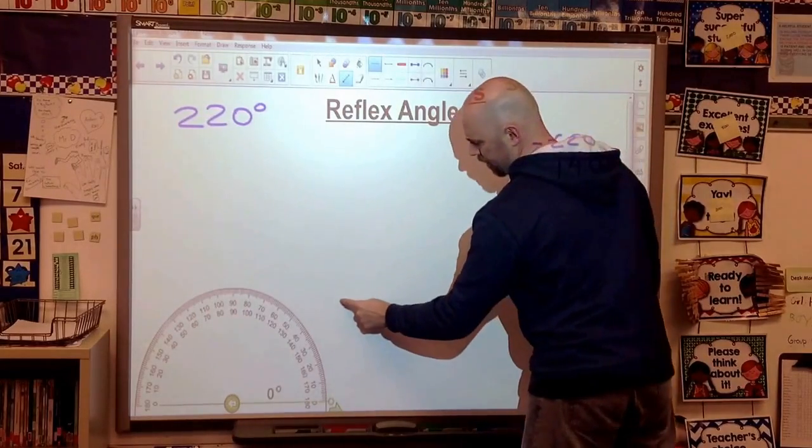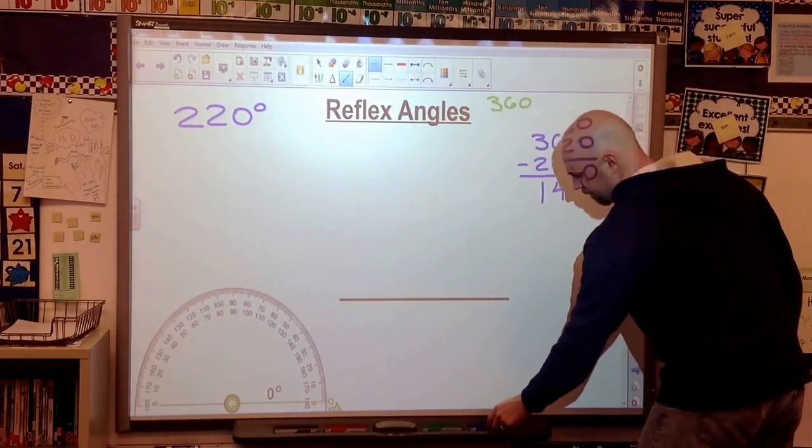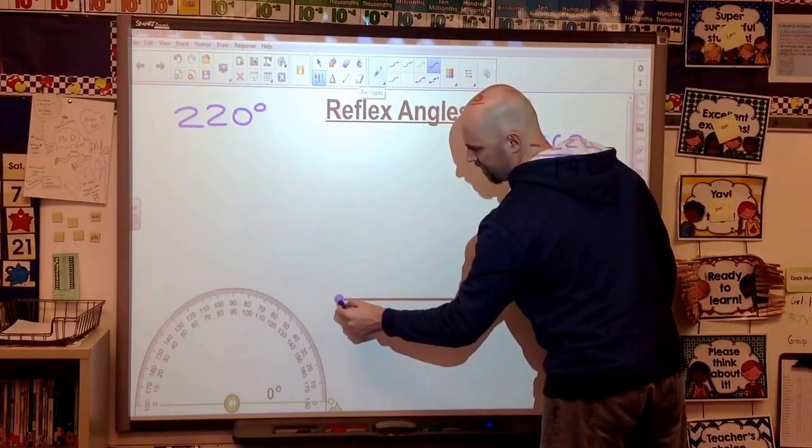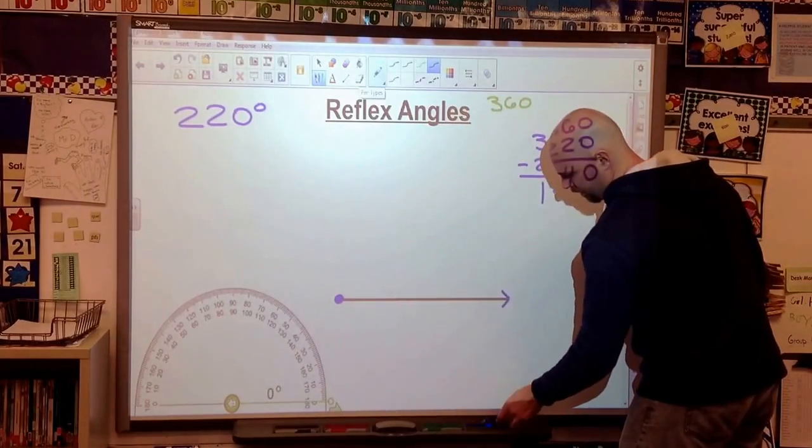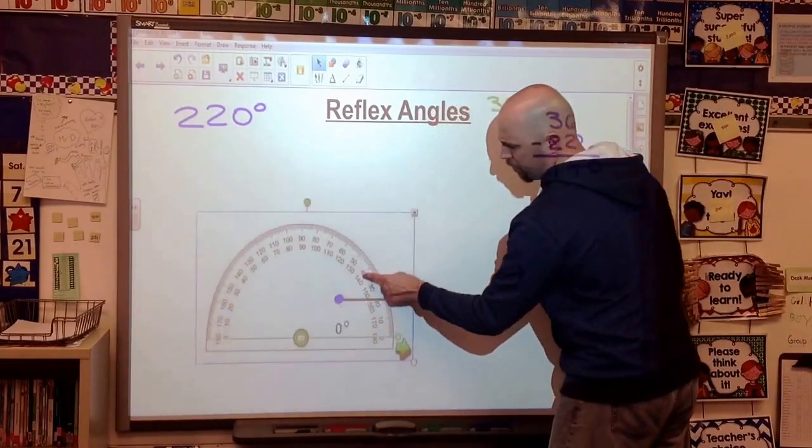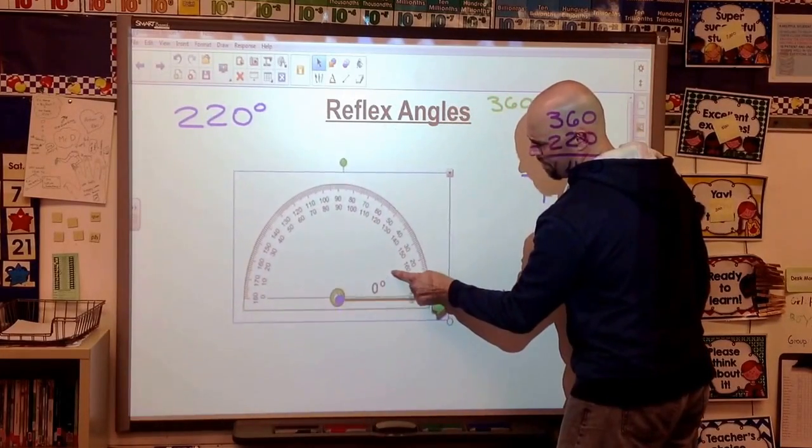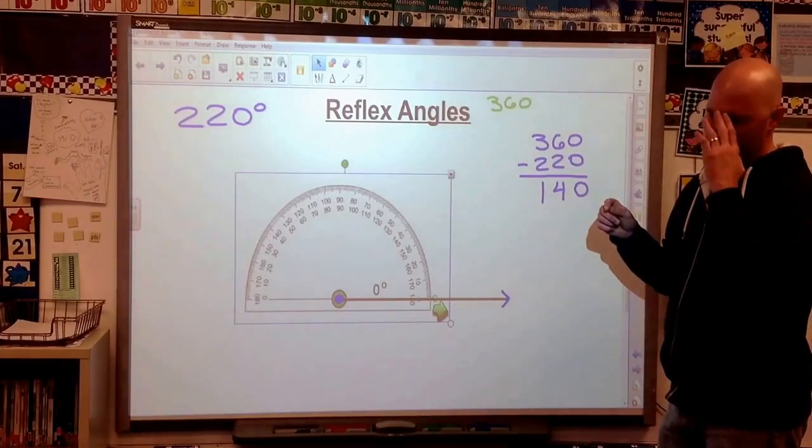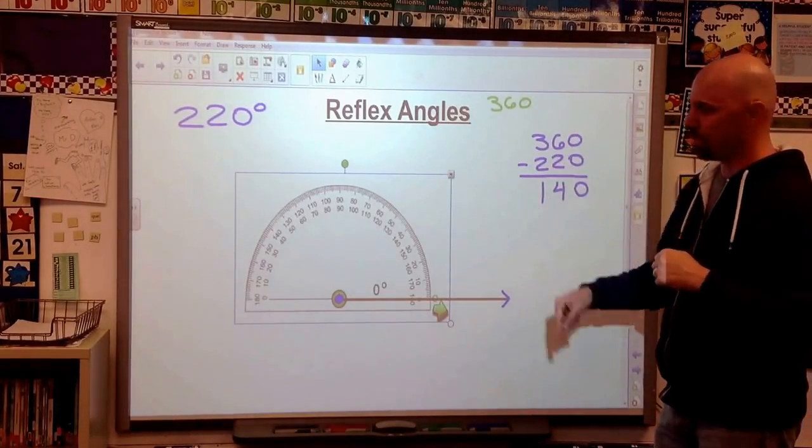So let's draw this 140 degree angle, and we'll see how this works out. When we draw angles, we create our baseline. And let's give our point that's eventually going to turn into our vertex. Let's move our protractor into position. Remember, 140 is an obtuse angle, so we're looking to see an obtuse angle in our mind. That's what I should see on my smart board here.